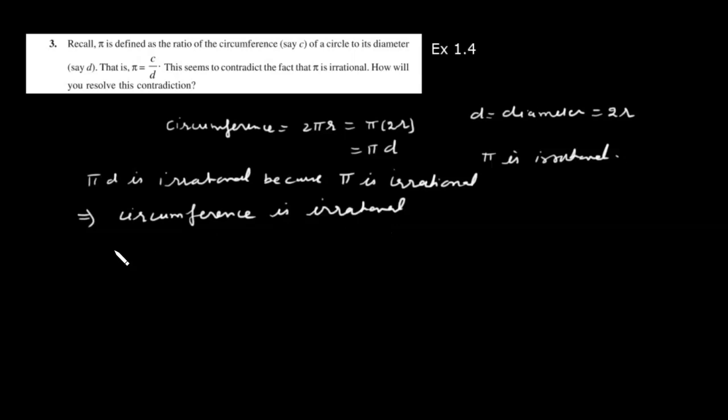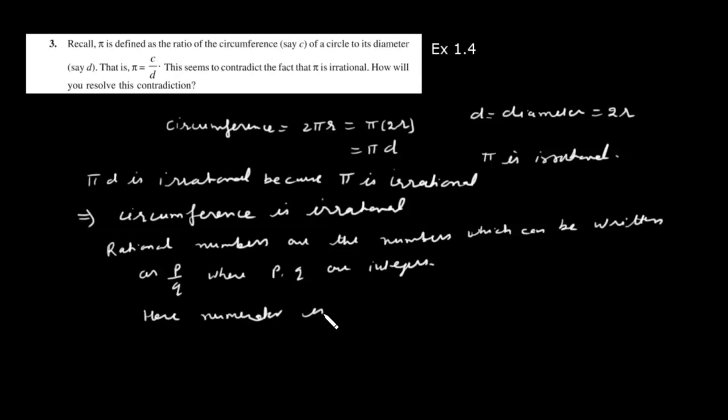Rational numbers are the numbers which can be written as p divided by q, where p and q are integers. Here, the numerator is irrational. And that implies that pi equals c divided by d is not a rational number in the traditional sense.